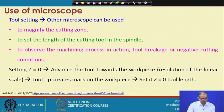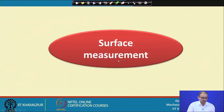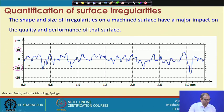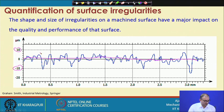After machining a component, dimensional measurement and surface roughness measurement must be performed. The shape and size of irregularities on a machined surface have a major impact on quality and performance. A surface profiler produces a roughness profile graph — a surface with ±10 micron variation is much rougher than one with a smoother profile — allowing you to understand the suitability of the surface for its intended application.